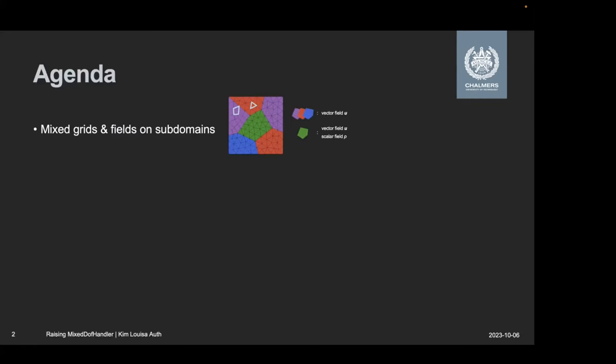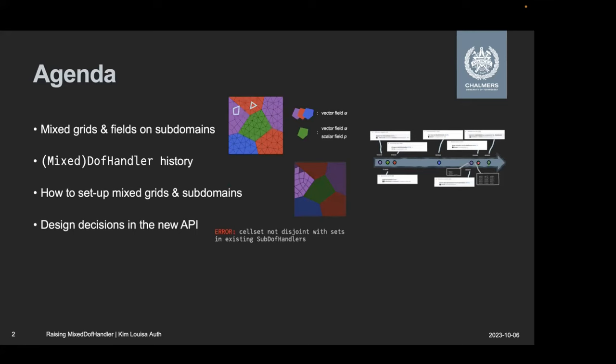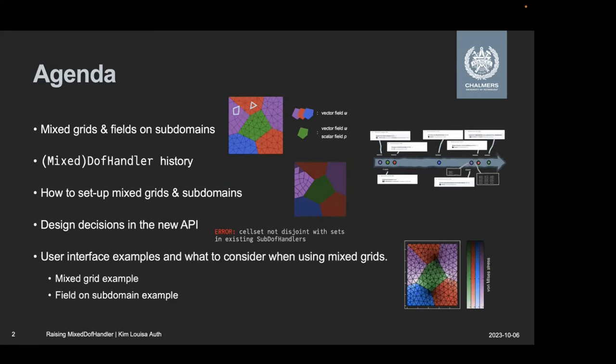And this is about offering support for so-called mixed or hybrid grids and also for fields on subdomains. So I'm going to start by introducing what that means at all. I gave a bit of a history overview because I thought that was cool. And then I will mainly give you a walkthrough for how to construct such problems, talk a bit about the design decisions we made for the new API, and round up with some examples.